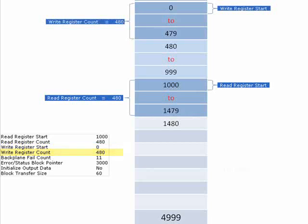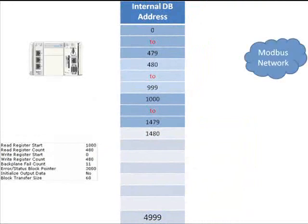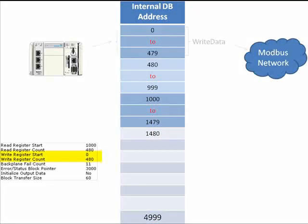We have a highlighted section of unused registers. On the Modbus network, the CompactLogix CPU writes to addresses 0 to 479 of the internal database on the MVI69 module. Those 480 registers can be used to write to Modbus devices on your Modbus network via Modbus master commands. Values from the Modbus network are stored in addresses 1,000 to 1,479 of the internal database.